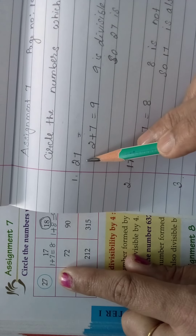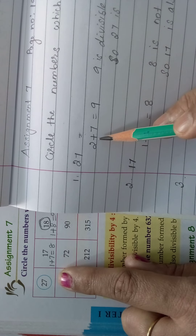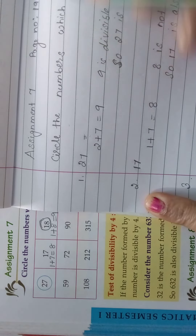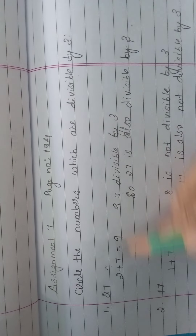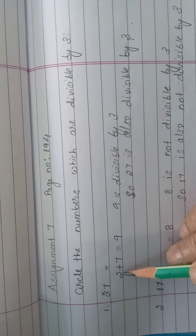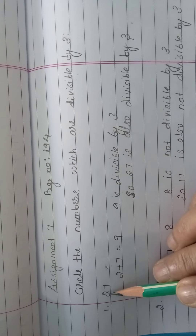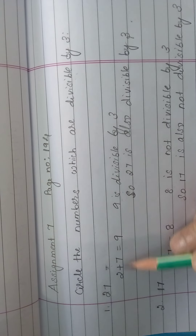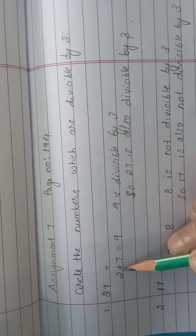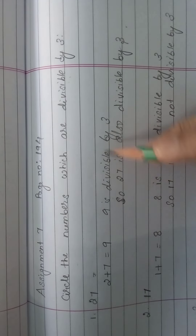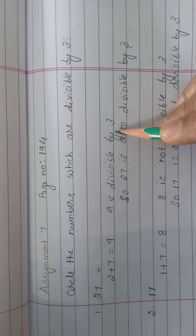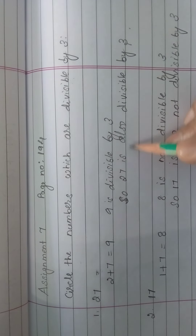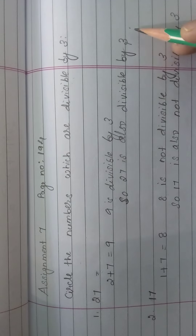Since we are going to check if 27 is divisible by 3, we should add the digits: 2 plus 7. What are all the digits? 2 and 7. So add them: 2 plus 7 is equal to 9. So 9 is divisible by 3 — yes, it is coming in the 3 table. 3 ones are 9. So 27 is also divisible by 3.